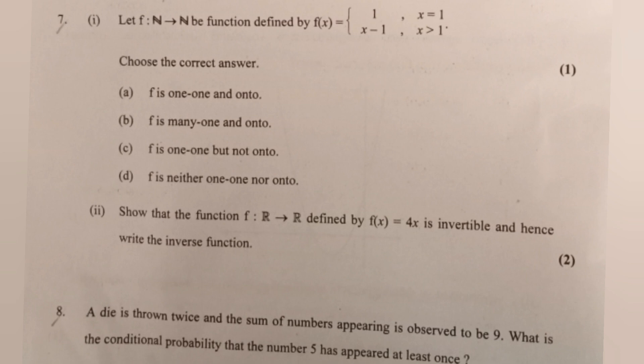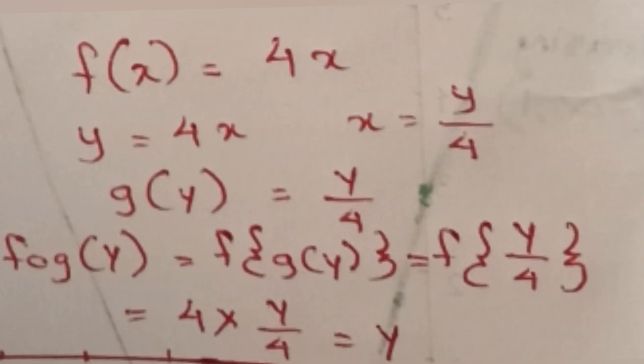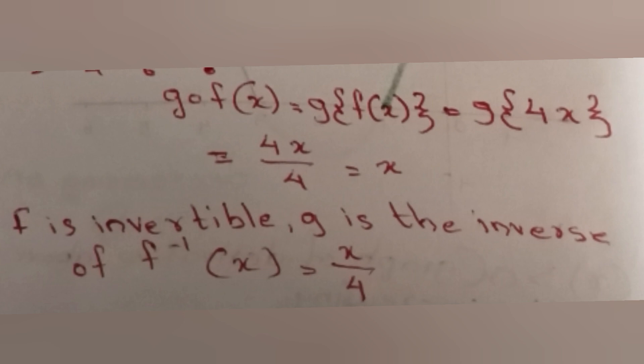Show that the function f from R to R defined by f(x) = 4x is invertible and write the inverse function. Answer: f(x) = 4x, so y = 4x gives x = y/4. Define g(y) = y/4. Then f(g(y)) = f(y/4) = 4 × (y/4) = y, and g(f(x)) = g(4x) = 4x/4 = x. Therefore f is invertible and the inverse function f⁻¹(x) = x/4.